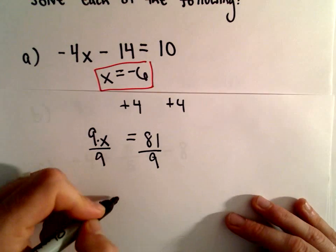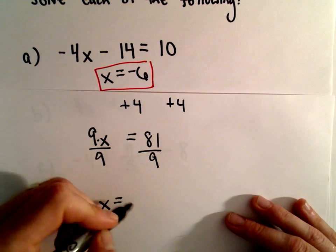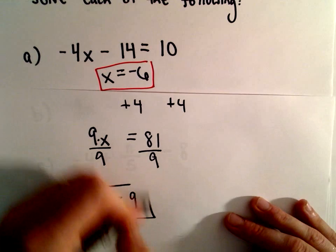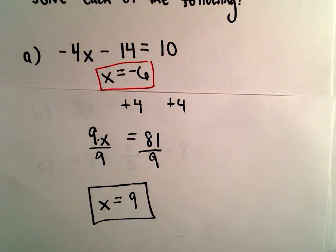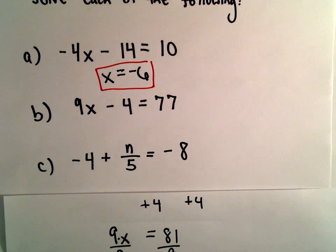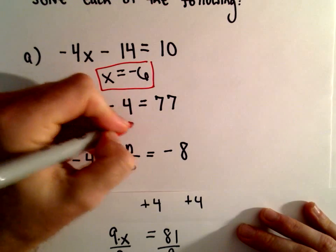9 divided by 9 is 1x, and 81 divided by 9 is also 9. So our solution for Part B here will be x equals 9.